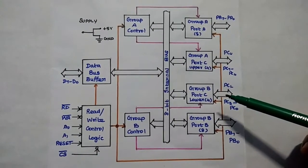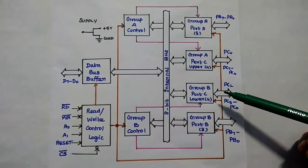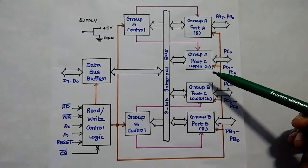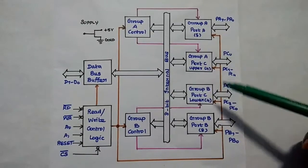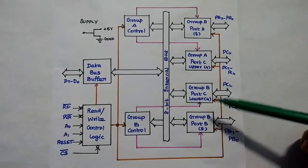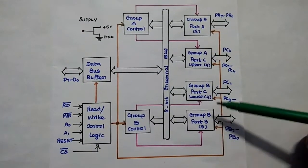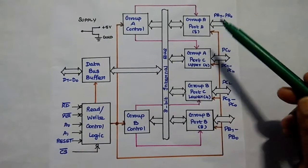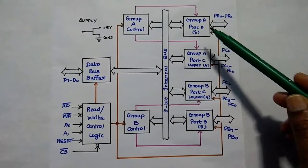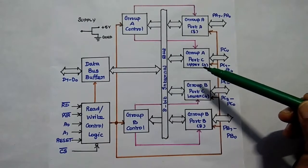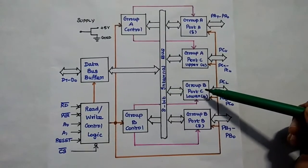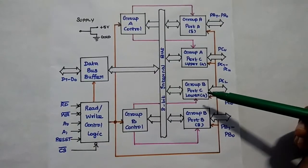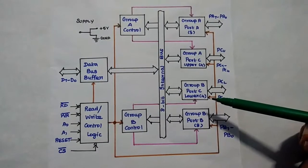The 8255A has three 8-bit ports: Port A, Port B, and Port C. These 24 pins are grouped as Group A and Group B with 12 pins each. Group A has Port A and Port C upper bits, while Group B has Port B and Port C lower bits.